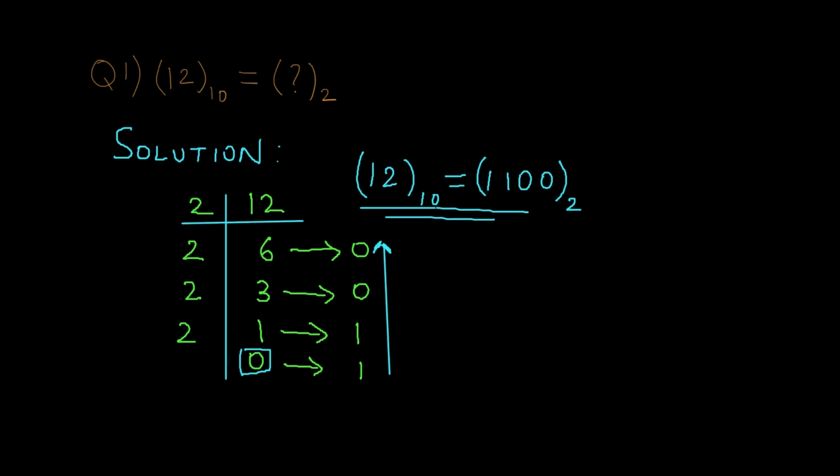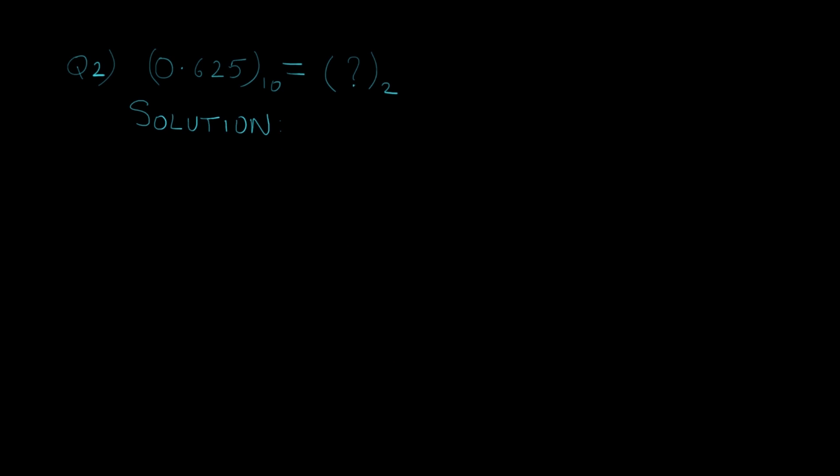So 12 in decimal is equal to 1100 in binary. That's the answer to our first question. Now let's move ahead with the second question. Here we have a fraction decimal number, 0.625, which needs to be converted to a binary number. In this case we multiply 0.625 by 2 until we reach 0 or a repeating pattern.